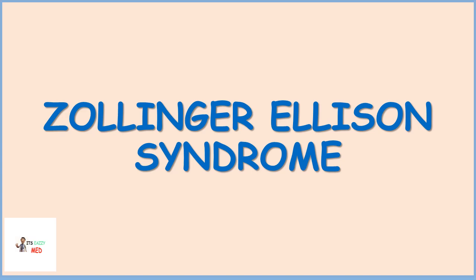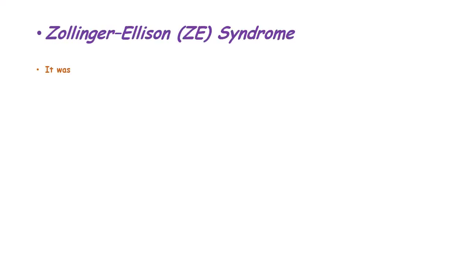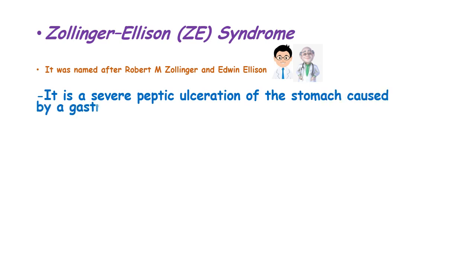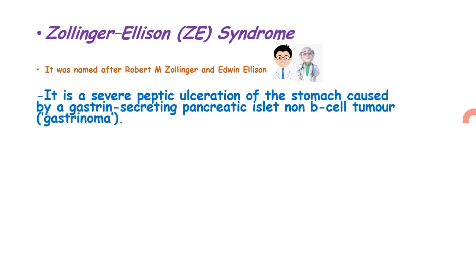Zollinger-Ellison syndrome was named after two physicians, Robert Zollinger and Edwin Ellison. It is a severe peptic ulceration of the stomach mucosa caused by a gastrin-secreting pancreatic non-beta cell tumor known as a gastrinoma.